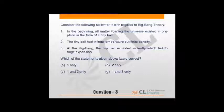Consider the following statements regarding Big Bang Theory. Not a very difficult question. If you know option 1 is wrong, A, C, and D can be discarded. In the beginning, all matter forming universe existed in one place as a tiny ball - absolutely correct. Tiny ball had infinite temperature but finite density - a dot mass in a single point means density must be infinite, so finite density is incorrect. At the Big Bang, the tiny ball exploded violently which led to huge expansion - this is correct, the main theory. So 1 and 3 stand correct.